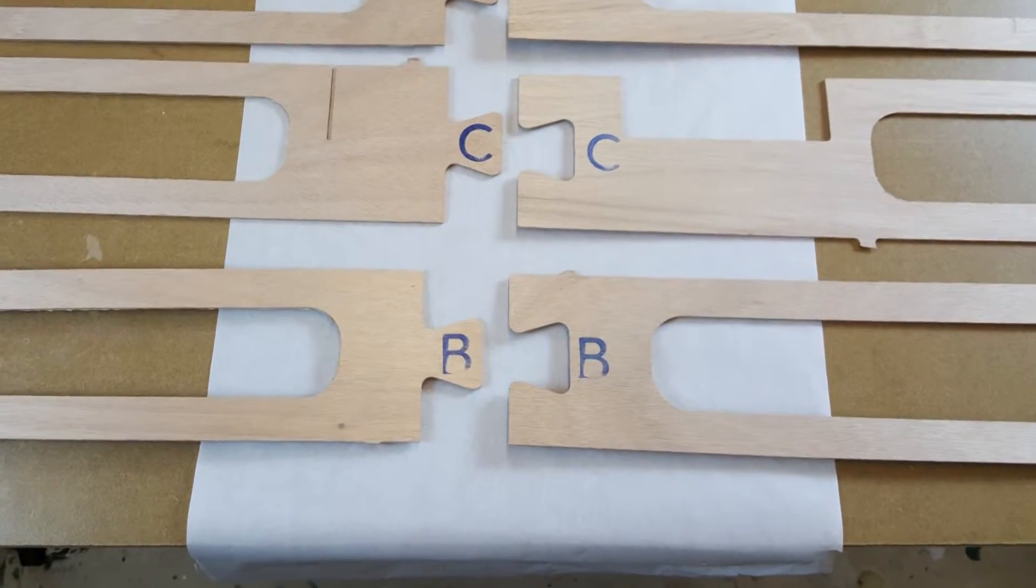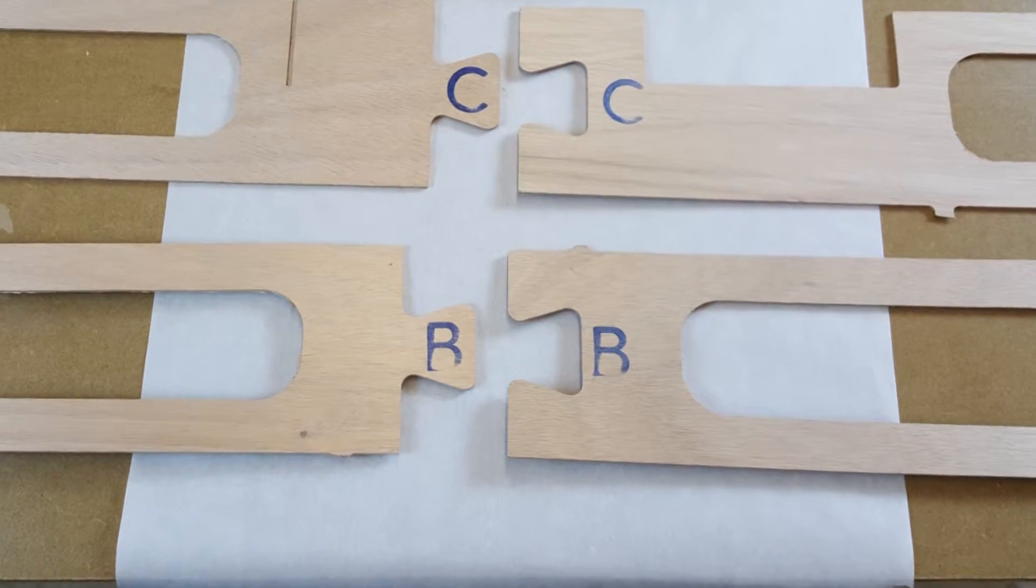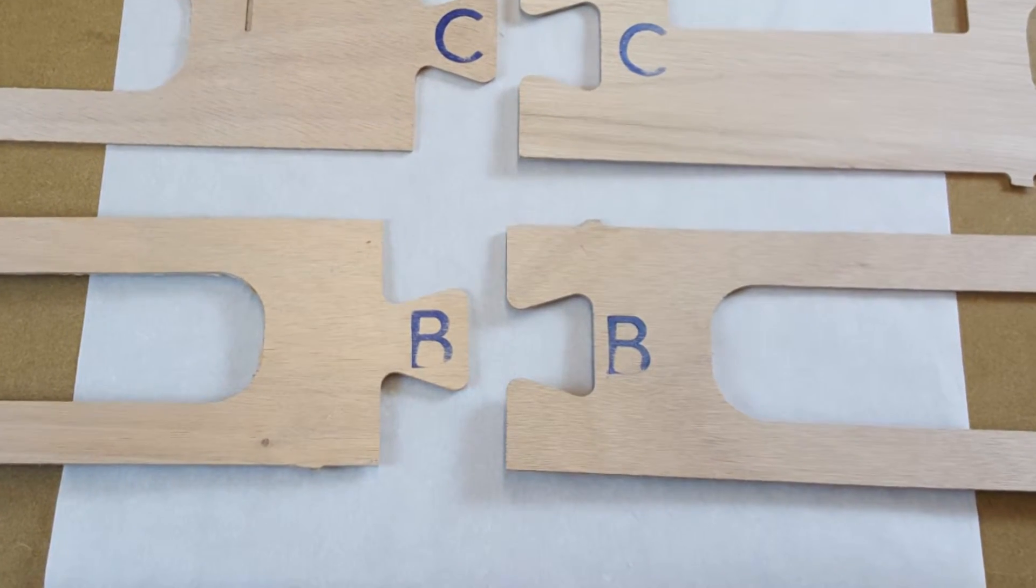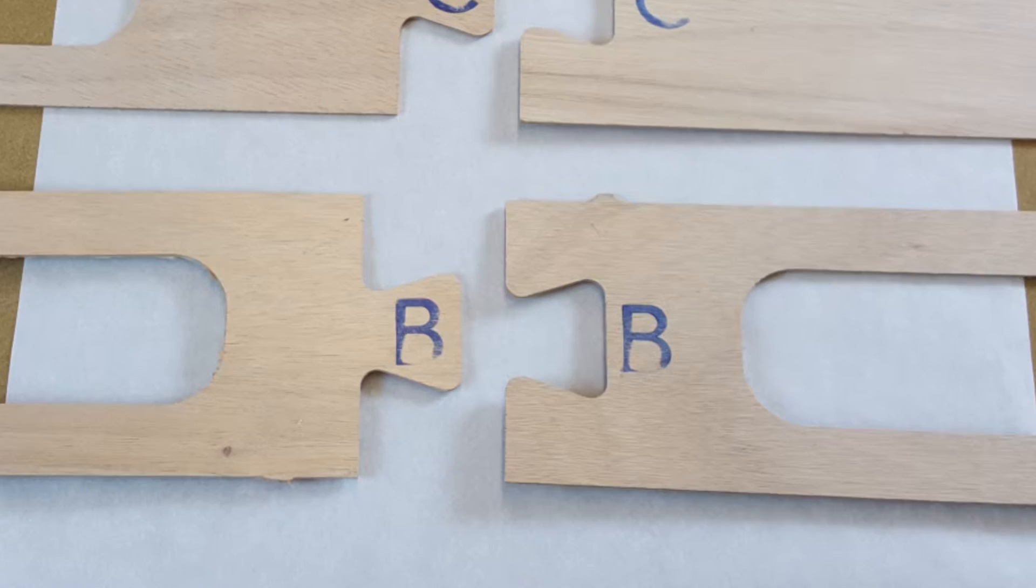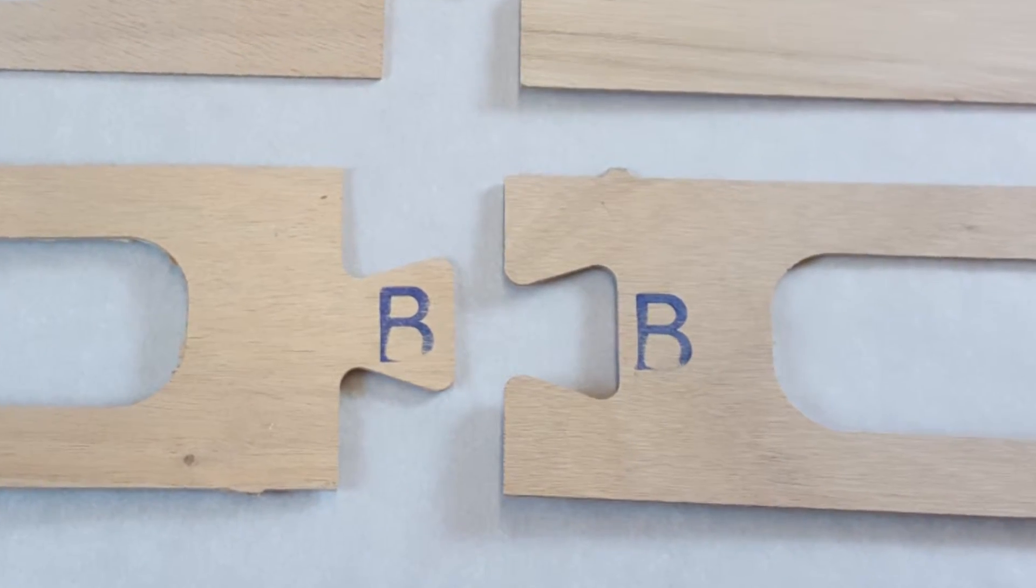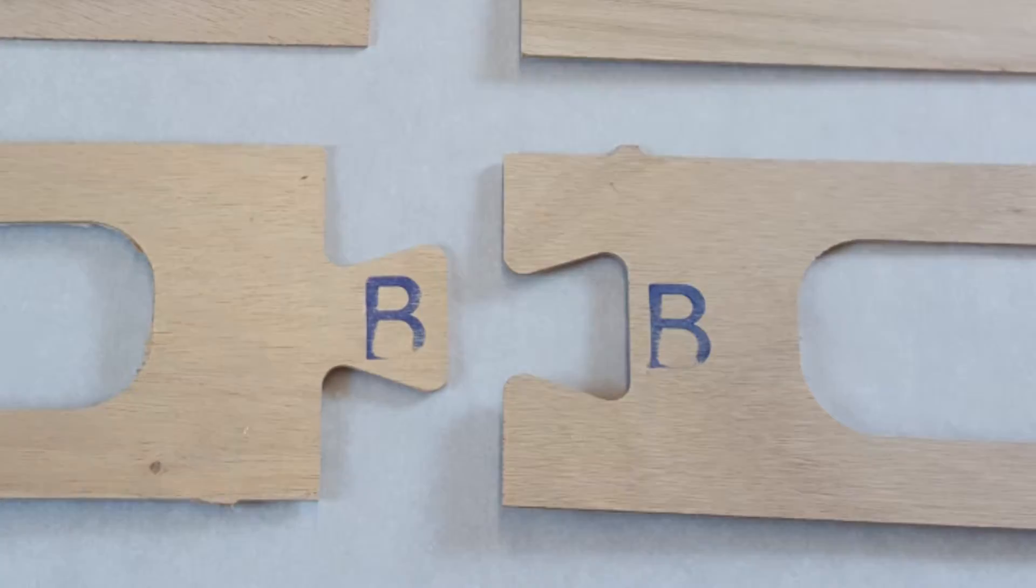Lay the longitudinal pieces with the letter marking B onto the table with the scarf joints aligned so they are ready to snap together. Both of the letter markings should be facing up as you see here.